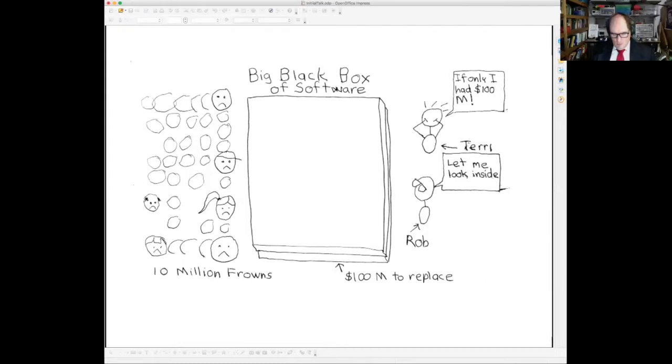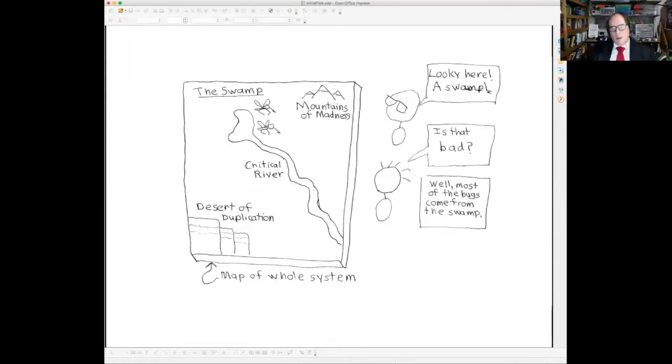So Rob said, let me look inside the box. And when he looked inside the box, he found some interesting things. Now, this is something that I recommend for anyone who has to rewrite a legacy system. You have to get someone who can build a map of the whole system. If you can't build a chart, and it may be bigger than an eight and a half by 11 sheet of paper, but if you can't build a map of your whole system, you have no business writing an RFP to try to rewrite it with government contractors.